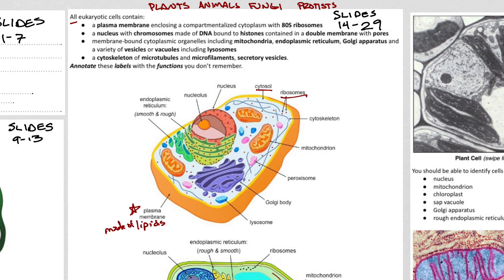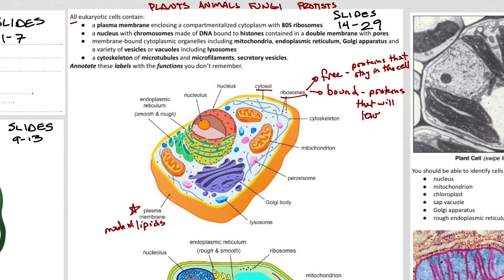There are a bunch of ribosomes as well. Ribosomes come in two varieties: free ribosomes and bound ribosomes. Free ribosomes synthesize proteins that are going to stay in the cell, and bound ribosomes synthesize proteins that will leave the cell. These are 80S ribosomes — prokaryotes have 70S ribosomes, so 80S means they're a little heavier. You don't need to know that the S stands for Svedberg units, but that's just a fact.